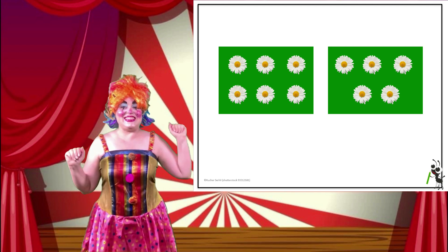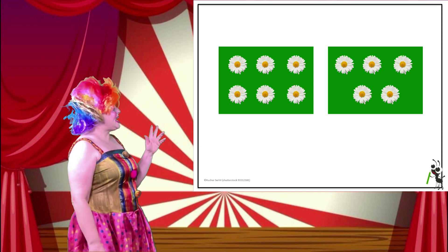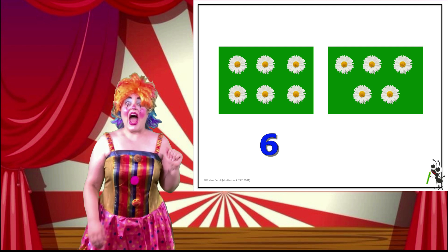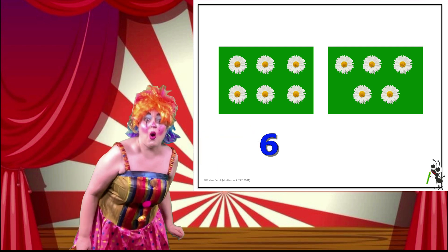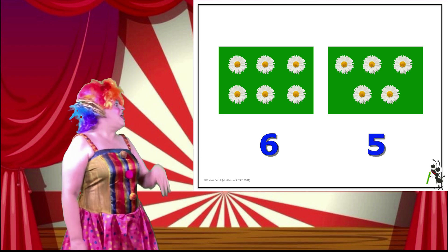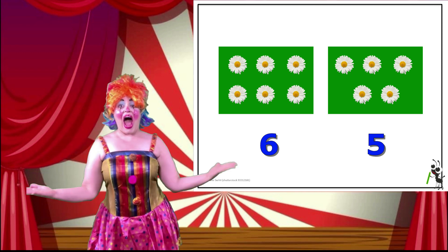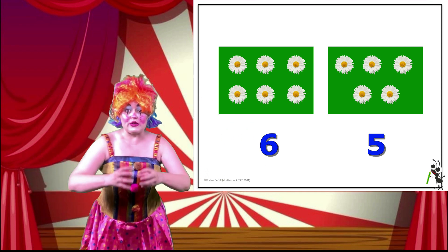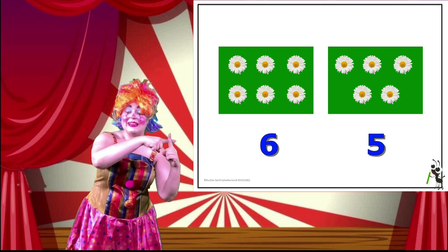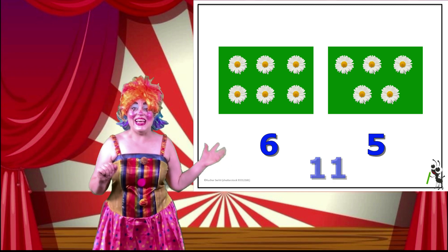Look at these daisies! Aren't they pretty? How many daisies are there on this plant? That's right! And how many daisies are on the other one? Really good! So, there are six daisies on the first plant and five daisies on the second plant. How many daisies are there all together? Remember, if we are putting things together, then we are adding them. That's right! There are eleven daisies all together!